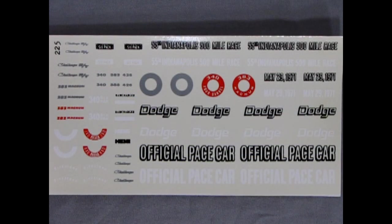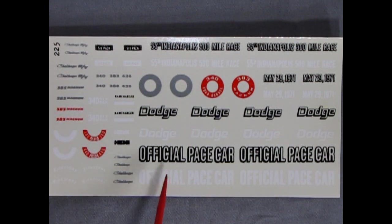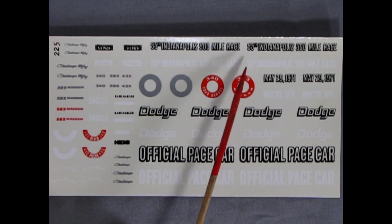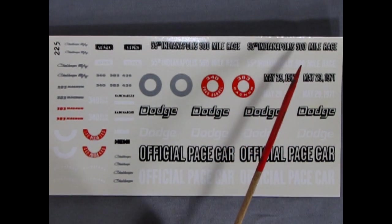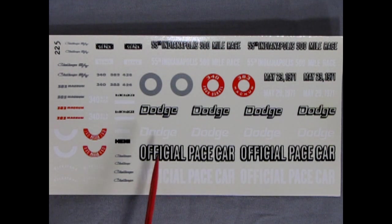So here is the special Fred Cady decal sheet. Or Fred Caddy. I don't know if it was Cady or Caddy. But anyway, here it is. This one is for the official pace car which was driven May 29, 1971 at the 55th Indianapolis 500 mile race. Now these have black and white. What you do is you lay down the white first. And then you lay the black over top of it. So it will pop out.